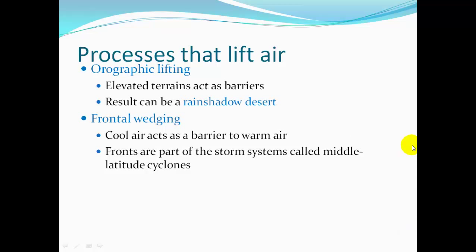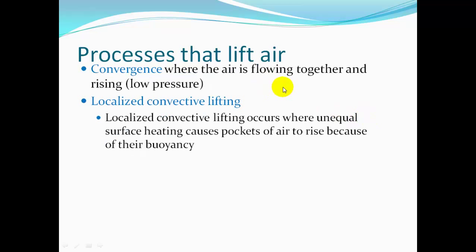Orographic lifting occurs when mountains or high terrain act as barriers, resulting in a rain shadow desert. Frontal wedging is when cold air acts as a barrier to warm air — fronts are part of storm systems called mid-latitude cyclones. In convergence, air is flowing together and rising in low pressure. Localized convective lifting occurs when unequal surface heating causes pockets of air to rise due to their buoyancy.